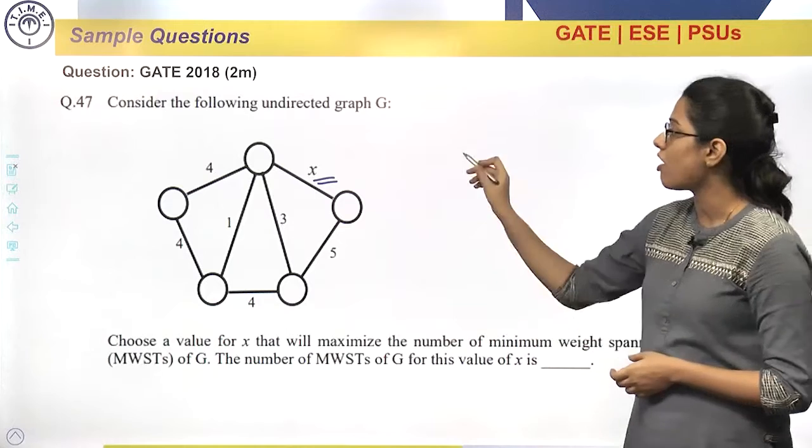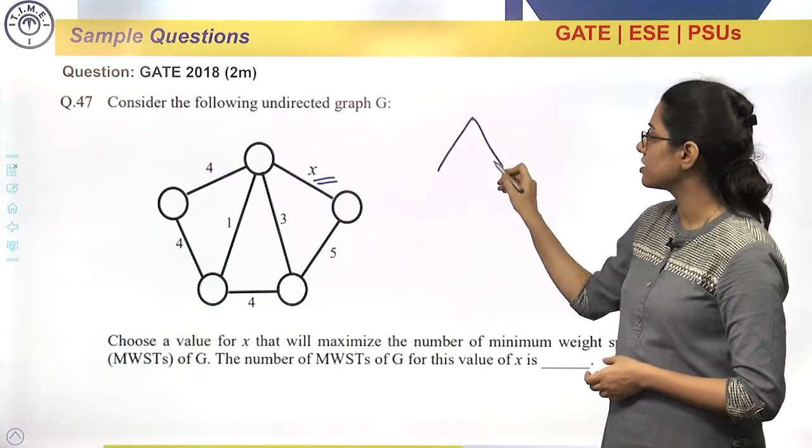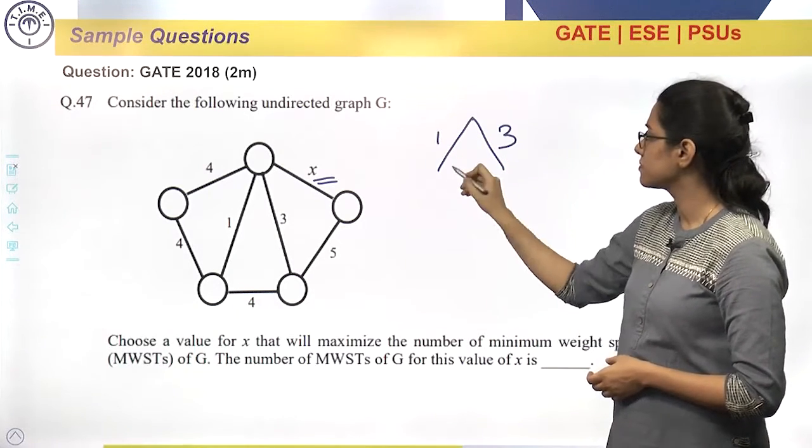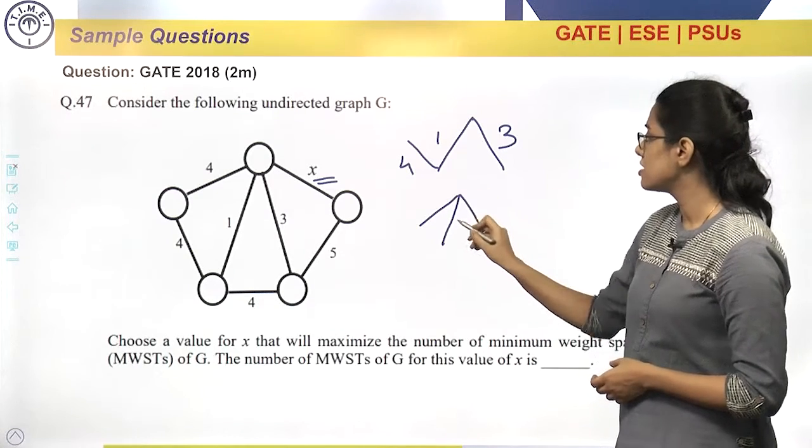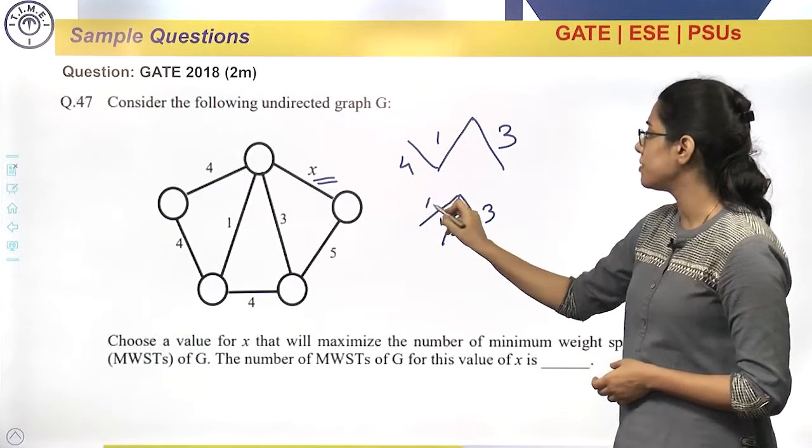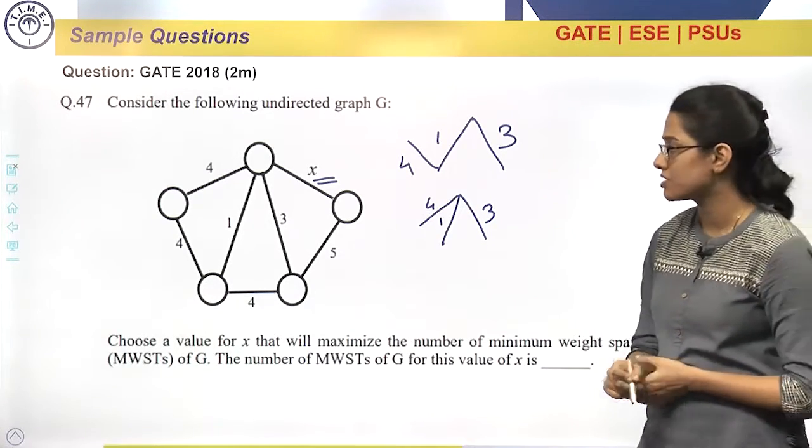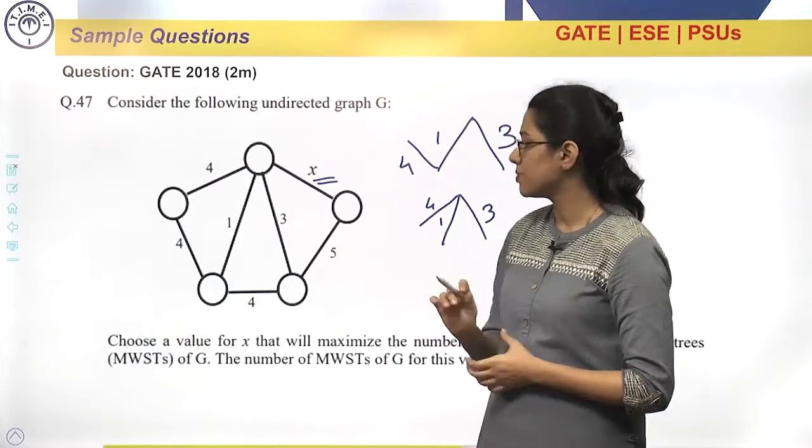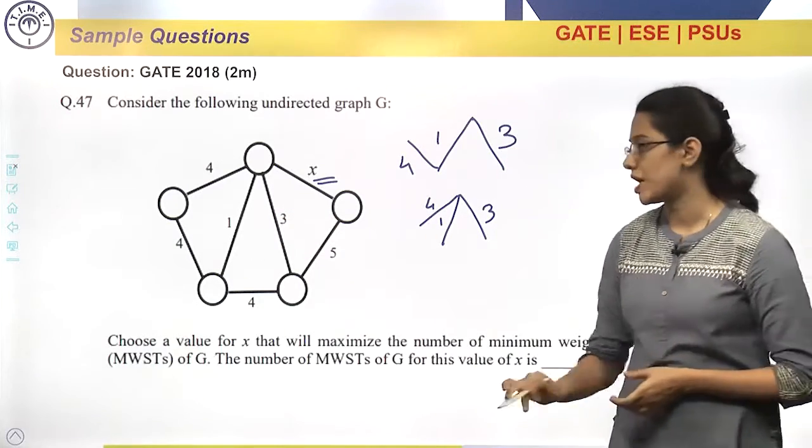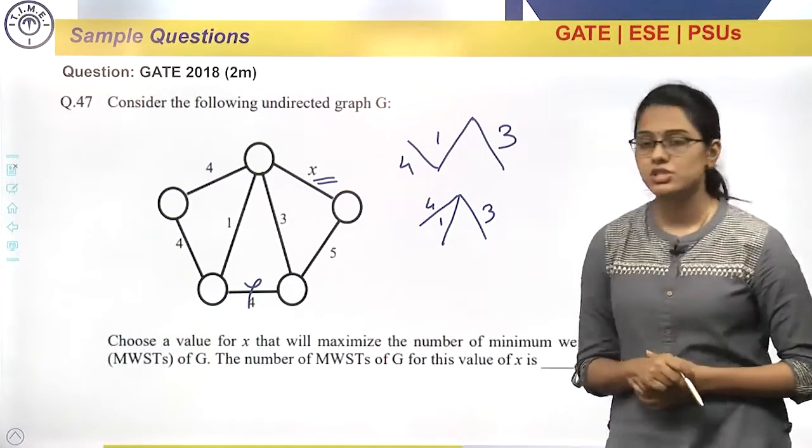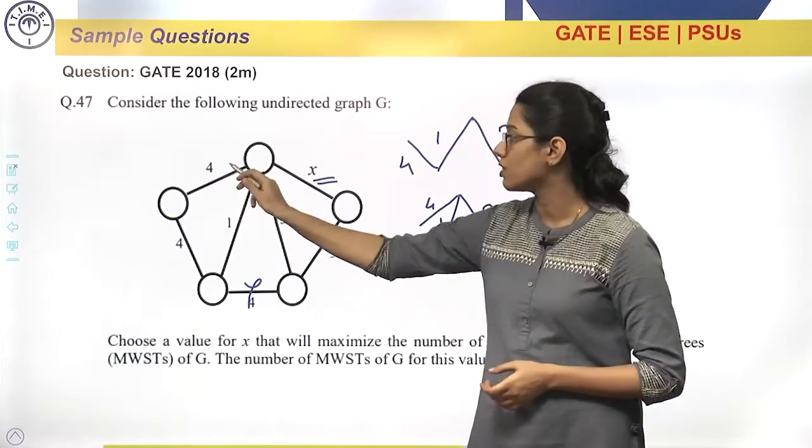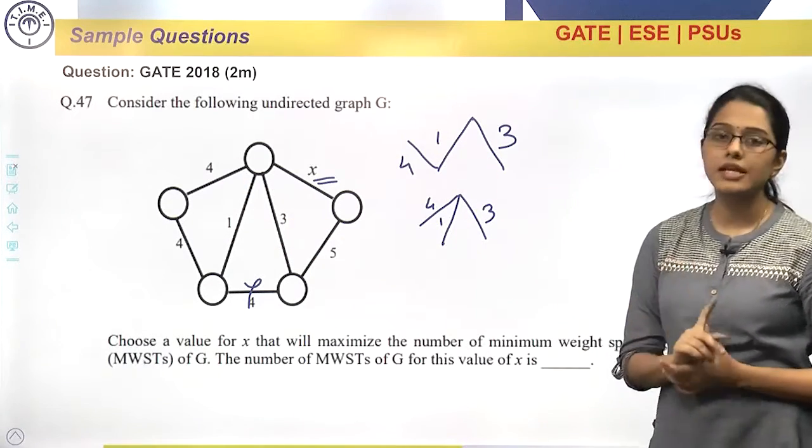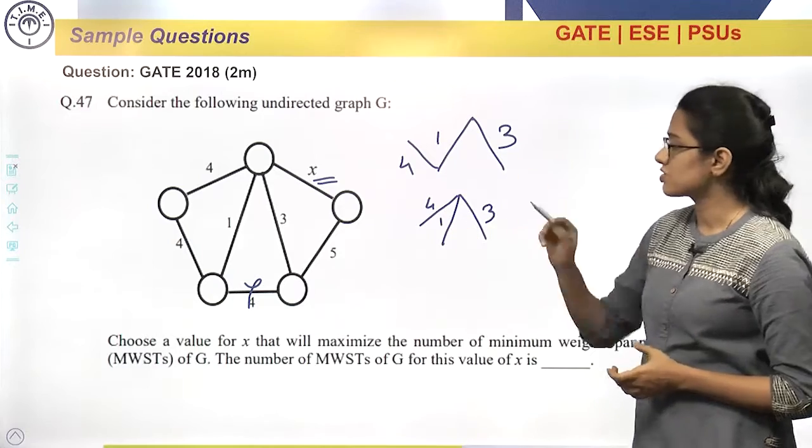So, let us first try to draw a minimum cost spanning tree for this graph. So you can see here, there are 2 minimum cost spanning trees possible. Firstly, 1, 3 will be compulsory or part of minimum cost spanning tree. 4 will not because it is the heaviest edge weight in a cycle. Then in this 4, out of this 2 fours, we can select any one. So there are 2 structures possible.